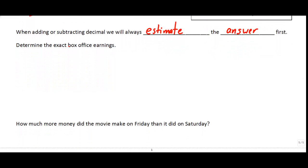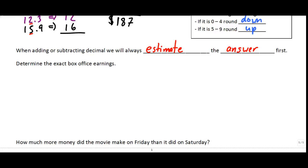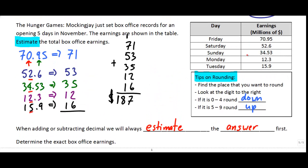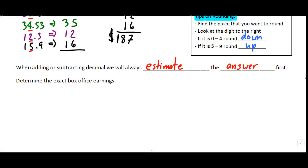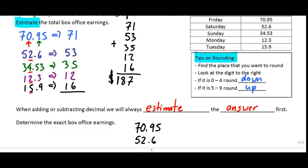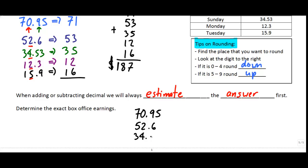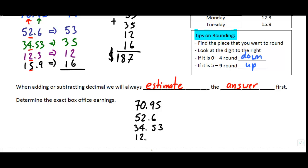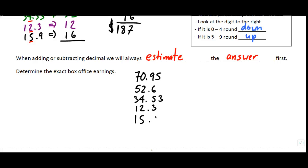Next we want to determine the exact box office earnings. So if we're going to find the exact number, then we need to go back here and we're going to use all of these digits that we saw here in the original. So 70.95 plus 52.6 plus 34.53 plus 12.3 plus 15.9. And that's my total.